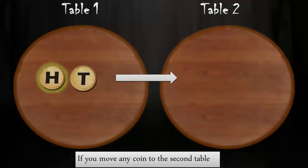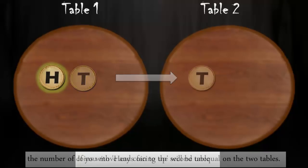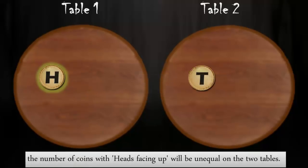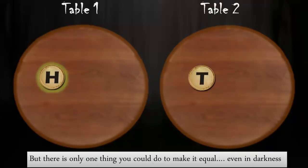Now, if you move any coin to the second table, the number of coins with heads facing up will be unequal on the two tables. But there is only one thing you could do to make it equal even if you are in darkness.